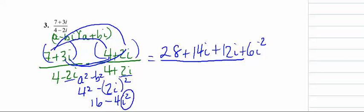Here we need to also remember that i squared is negative 1, and so that changes this minus 4 to a plus 4, so 16 plus 4 is 20. So now we can go back here and put 20 in the denominator.